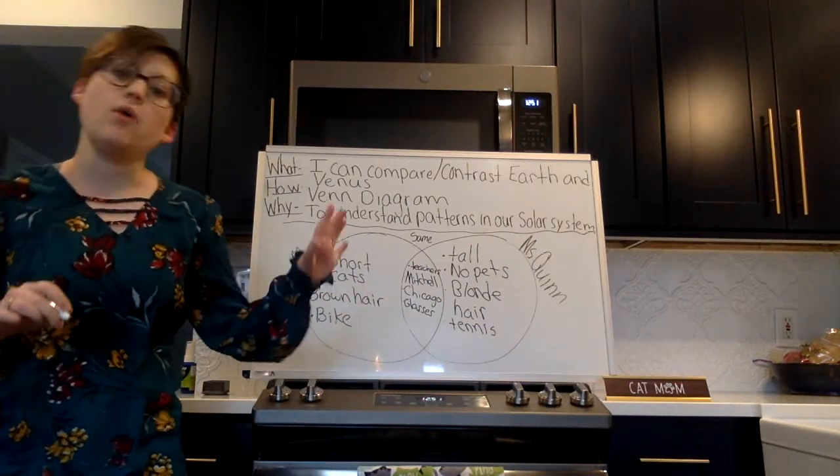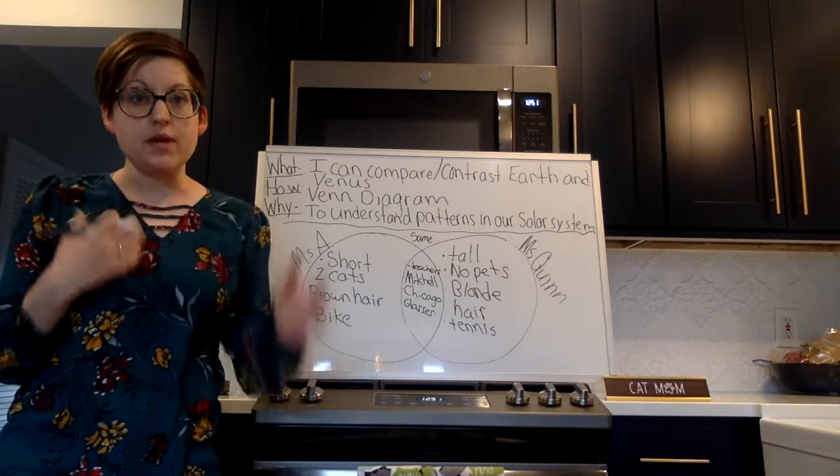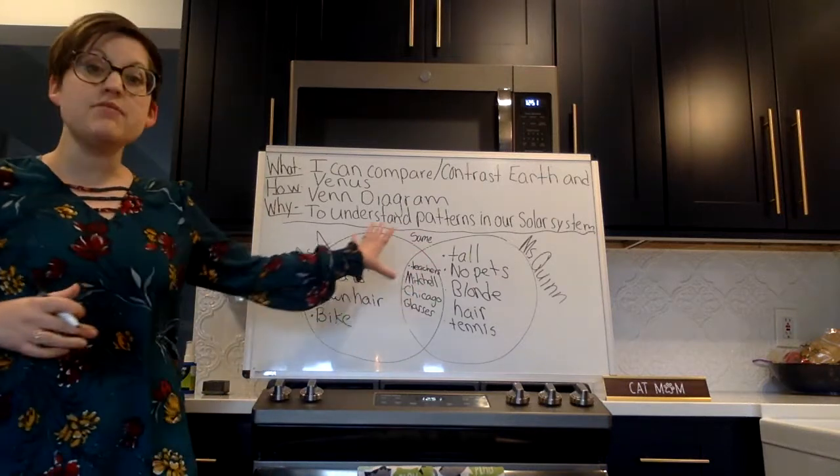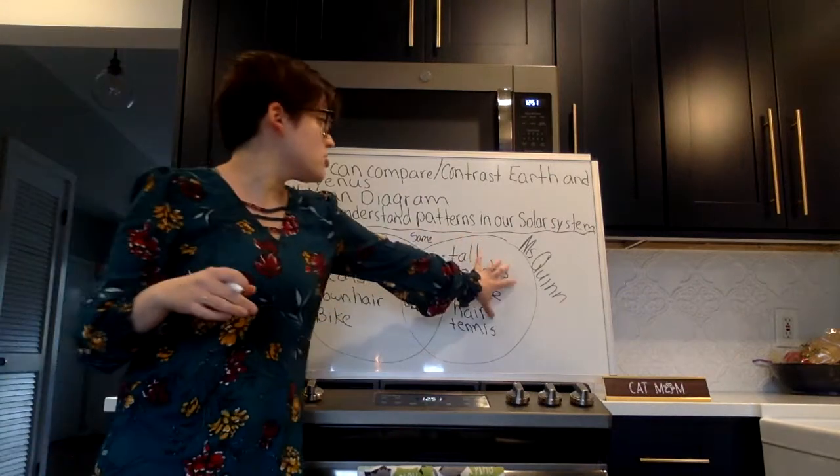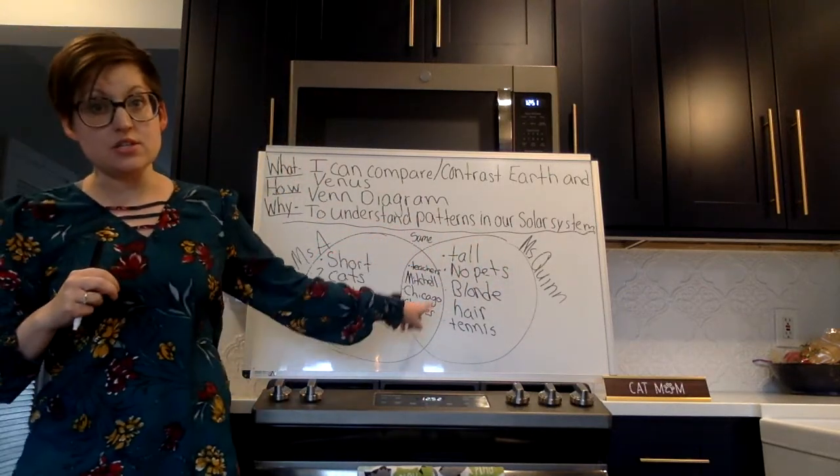When I use my Venn diagram, it becomes very clear to see that these sections are what's different about us, and then the center is what is the same.